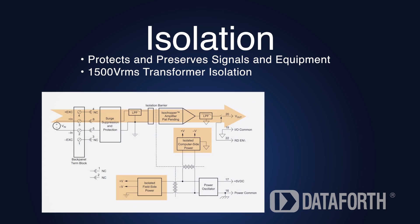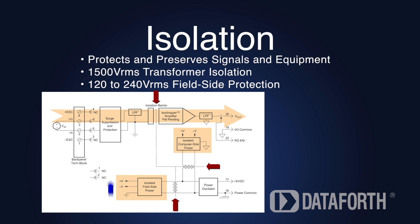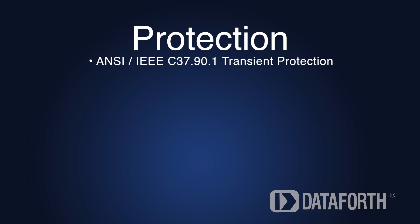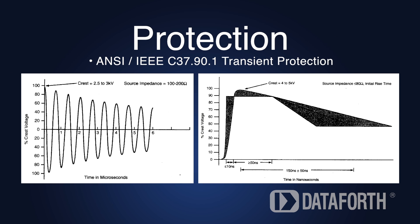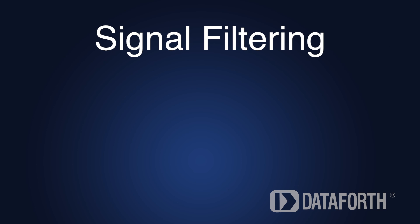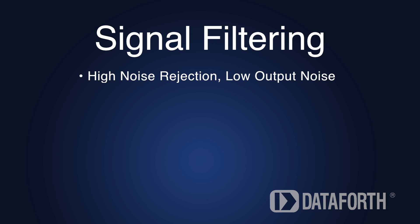Data Force signal conditioners provide isolation from both the power supply and ground lines. They also isolate field-side input signals from the computer or output side. Protection is the second criterion, and our conditioners protect against input overload, surge, and transient events. Signal filtering is the third criterion, needed for high electrical noise rejection and reduced output noise.